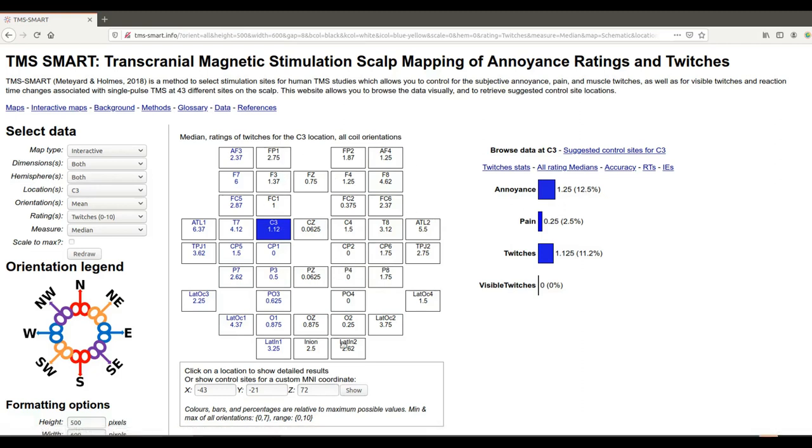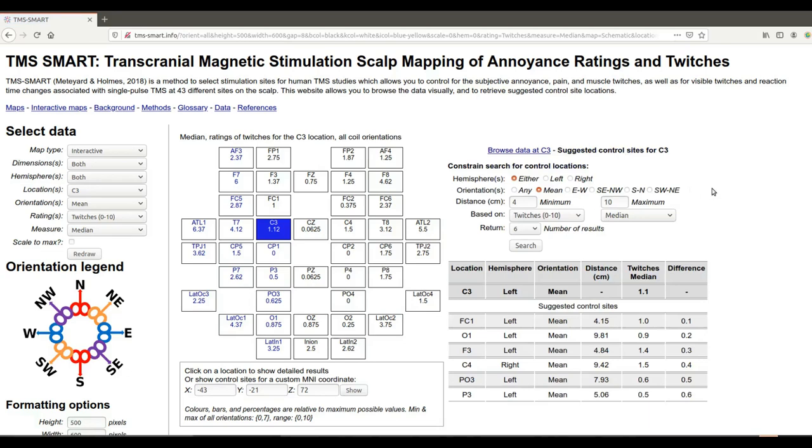So you could just look at the numbers here and just choose one that looks similar and that would be perfectly fine. But you can also use this little tool we've provided up here. So you can just fill in your criteria for searching for a control site and you'll get a list of potential control sites down here.